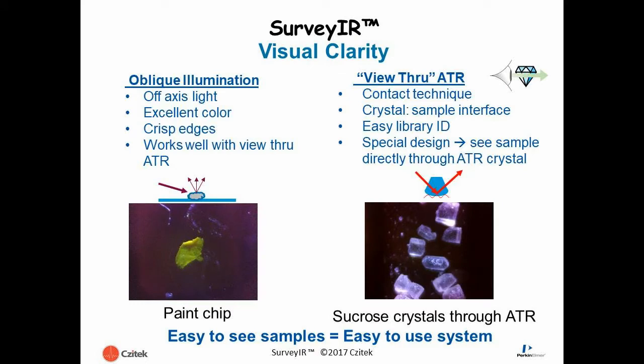In this presentation, we will demonstrate an analysis using Surveyor attenuated total reflection spectroscopy. In this case, the Surveyor is interfaced to a Perkin-Elmer Spectrum II FTIR spectrometer. In this example, we're going to be using a Diamond ATR sample analysis method.